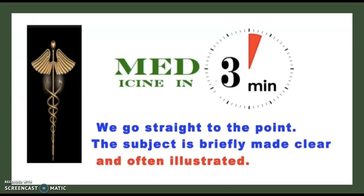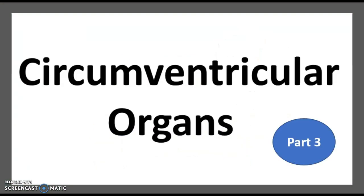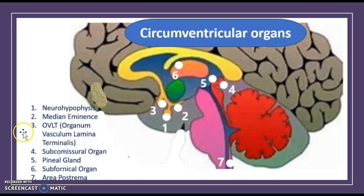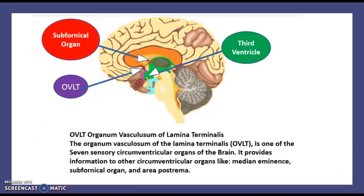Hello everyone, this is Medicine in Three Minutes, and today we're talking about part three of circumventricular organs — more specifically, this video will cover the OVLT, the organum vasculosum lamina terminalis. The organum vasculosum lamina terminalis is one of the seven sensory circumventricular organs of the brain, and it provides information to other circumventricular organs like the median eminence, the sub-fornical organ, and the area postrema.